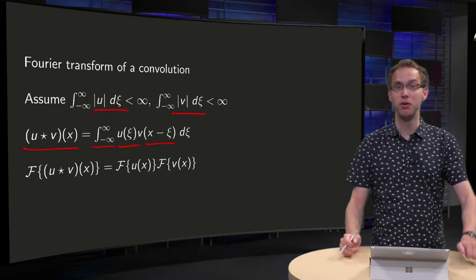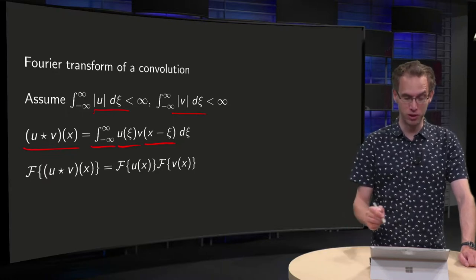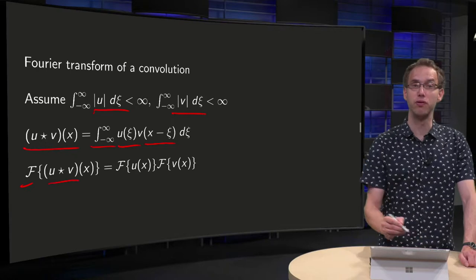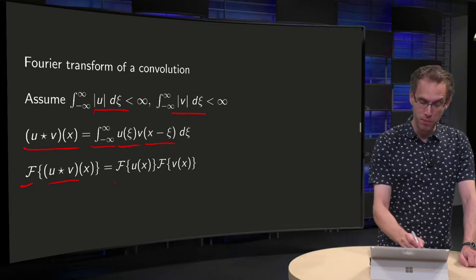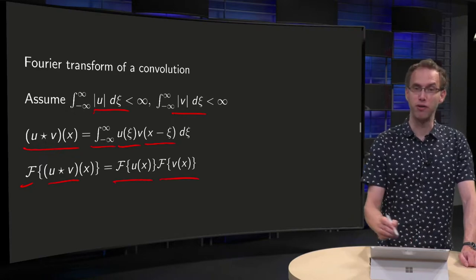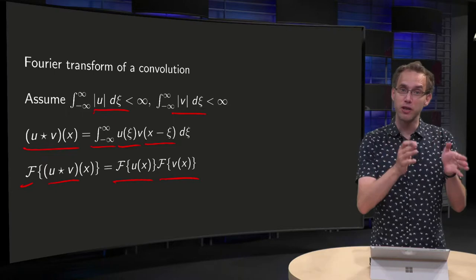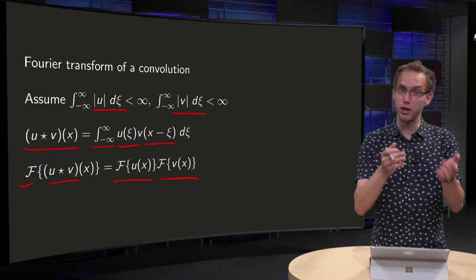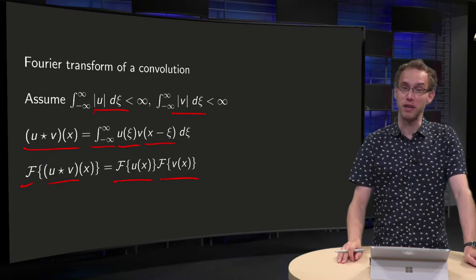But what happens if you compute the Fourier transform of such a convolution, so the Fourier transform of the convolution of u and v? As it turns out, it will be the product of the Fourier transforms of u and v. So the Fourier transform of a convolution in Fourier space becomes nicely the product of their respective Fourier transforms.